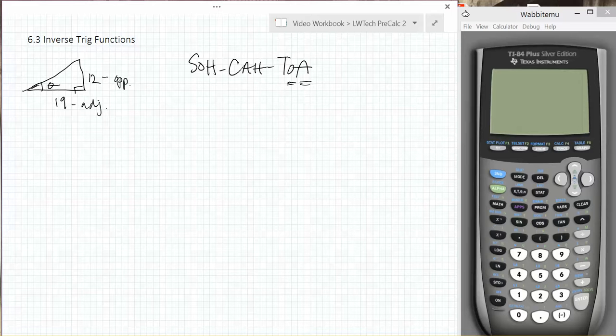Sounds like we need to use the TOA part. Tangent theta equals opposite over adjacent. Plugging in our values, we have the equation tangent of theta equals 12 over 19.